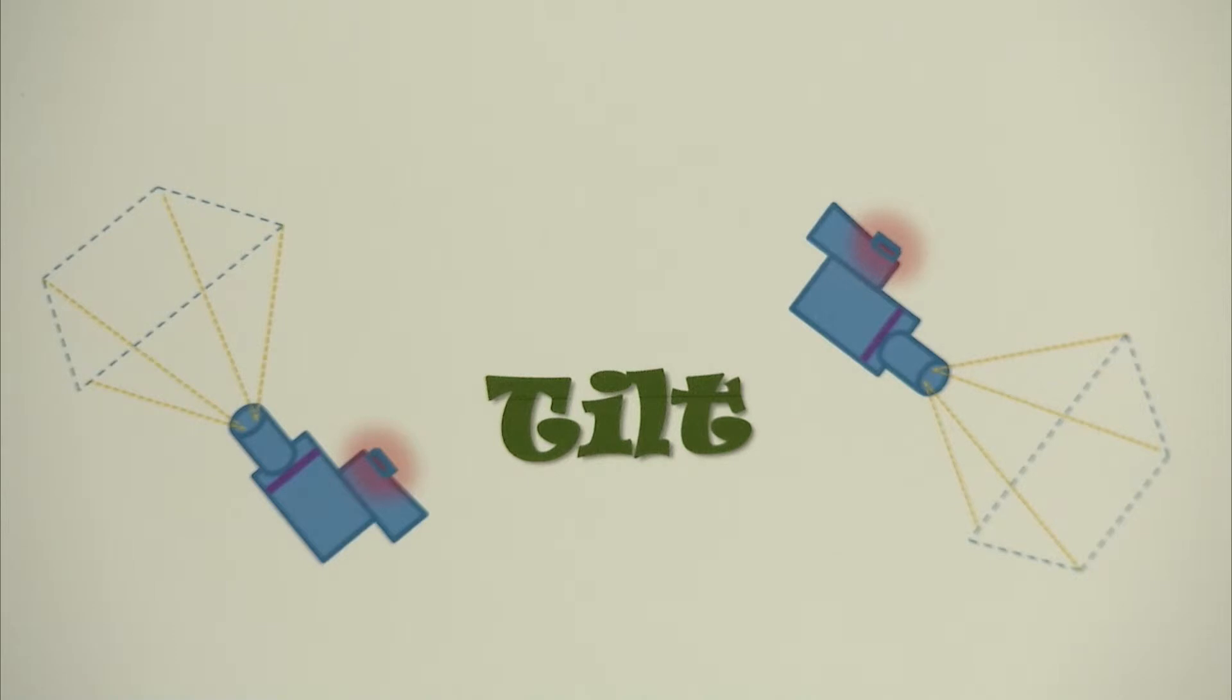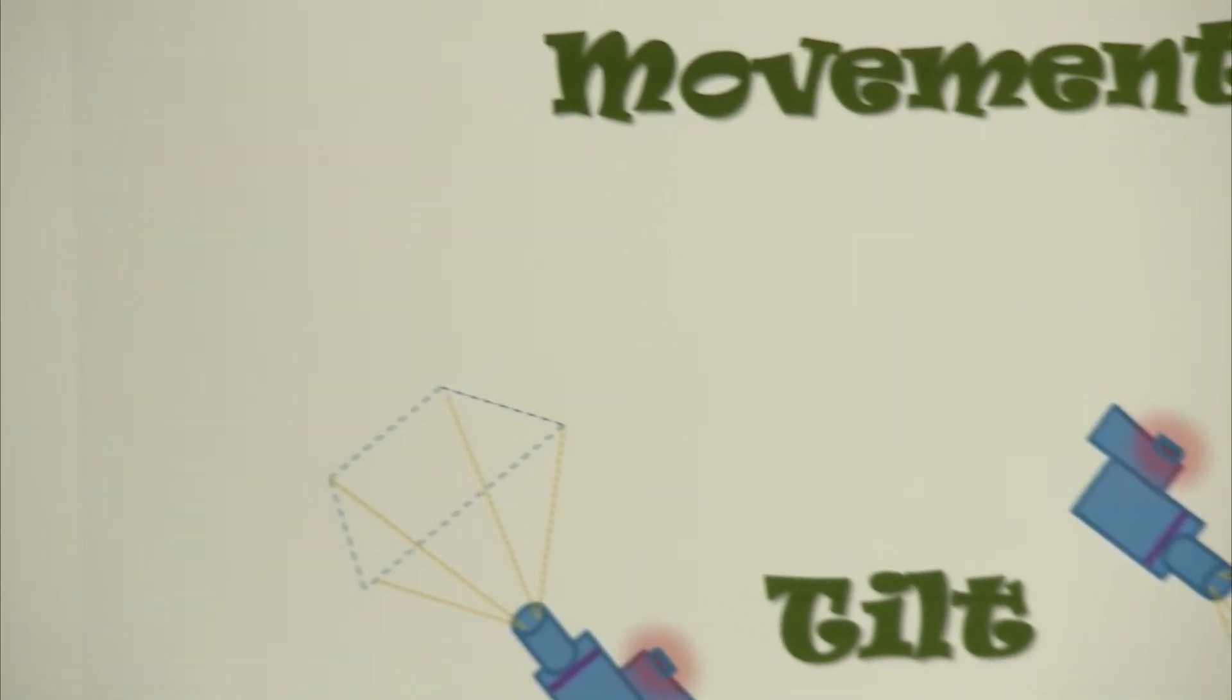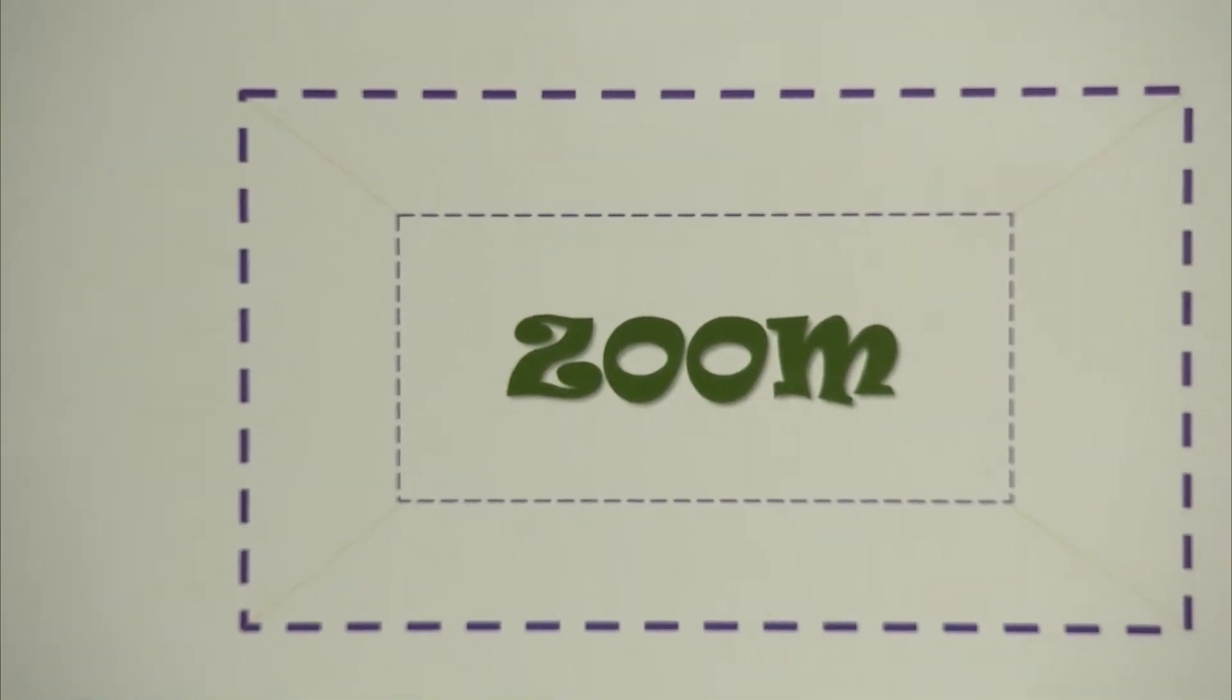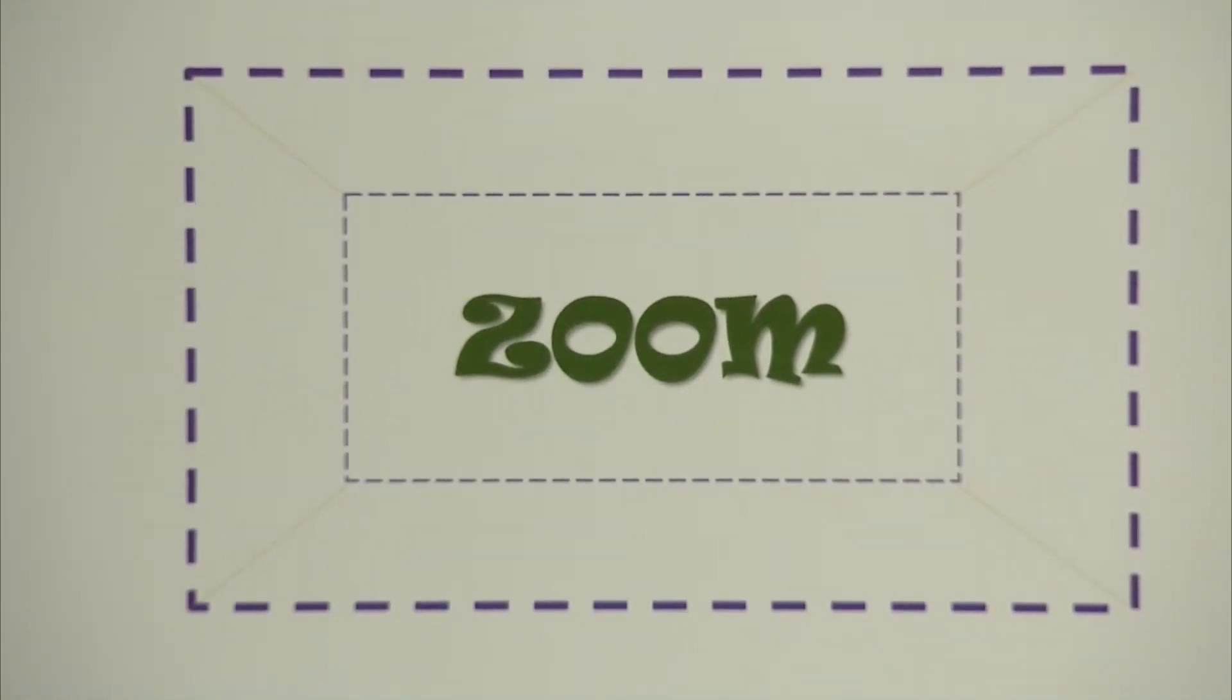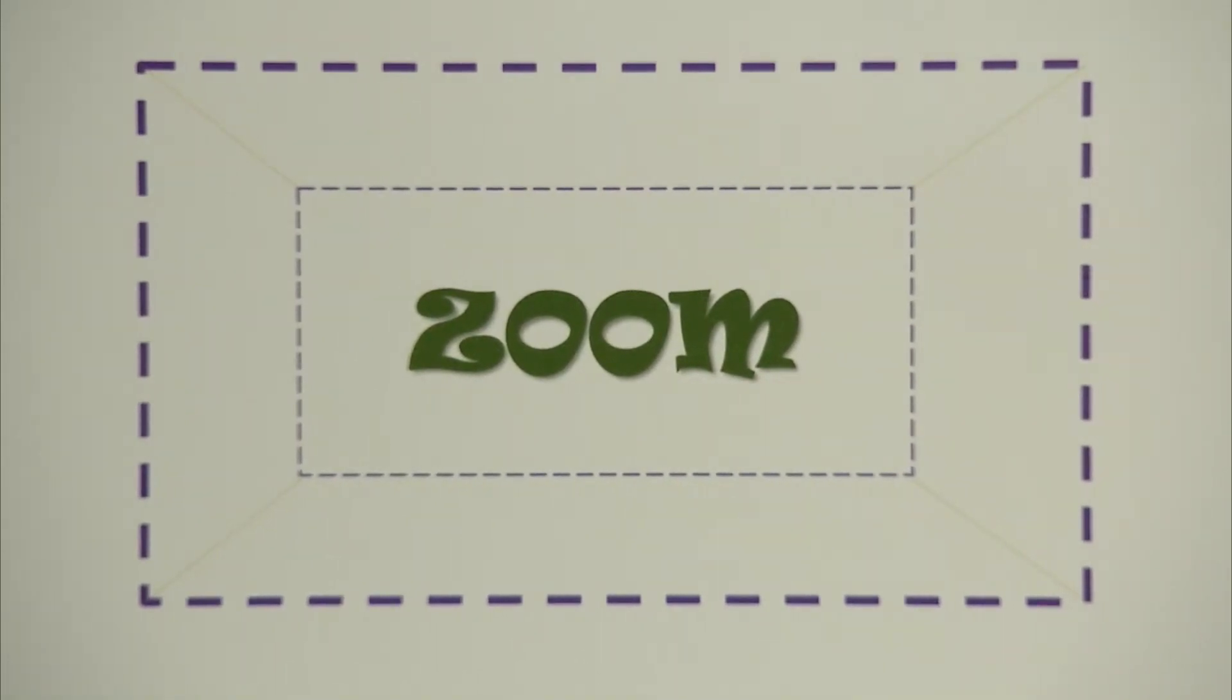Our next term is zoom. The zoom is not really a camera movement, but it does alter the framing of the shot. To zoom is to change the focal length of the lens to make it appear that the camera is closer or farther away from the subject. We may zoom in. You notice the perspective does not change, or the director may ask for a zoom out.